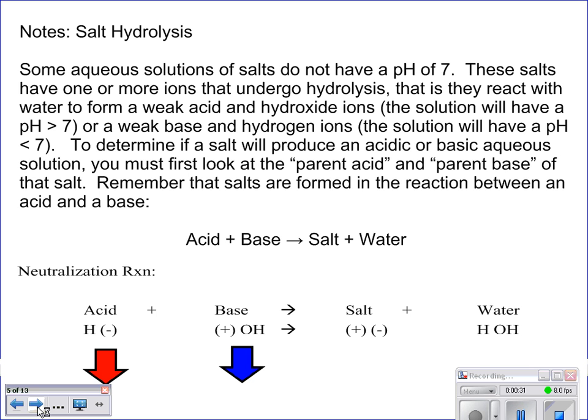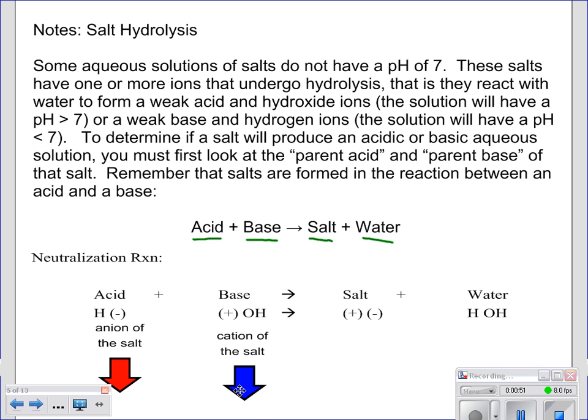So we know our neutralization reaction is going to be an acid plus a base yields salt plus water. Let's just remind ourselves of a couple things. As far as the acid goes, it's the anion of the salt that comes from the acid, and for your base, it's the cation of the salt. So that means here's your anion for your acid, here's your cation for your base. Those are the two things that form your salt. And remember to always write your positive first, your cation first, then your anion. And then of course your hydrogen and your hydroxide from those two form your water.